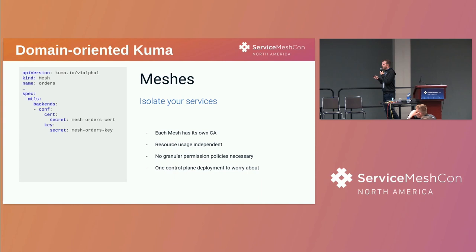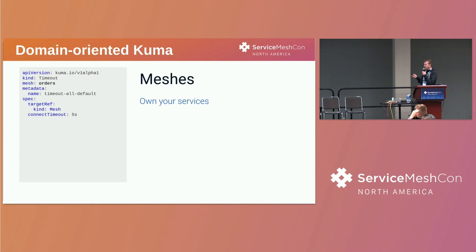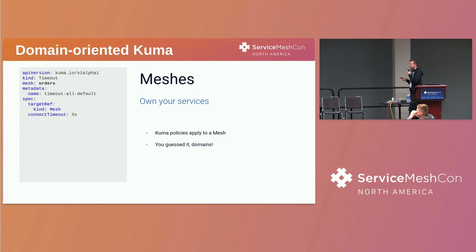The second aspect is ownership. Every policy in Kuma applies to a specific mesh, so we can have the role of a mesh owner who is able to define all the network policies that Kuma provides, but only for their mesh — it won't affect any other services. These two things together give us a great way to model the domain from domain-oriented design. In domain-oriented Kuma, we model domains using meshes.